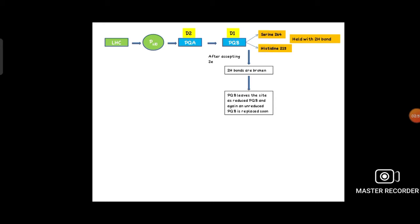Plastoquinone B is attached to the D1 protein niche. There are two hydrogen bonds held by plastoquinone B—serine 264 and histidine 215. After accepting two electrons, when plastoquinone B accepts the electrons, it gets reduced. When this happens, the two hydrogen bonds are broken, the reduced plastoquinone B will leave the site, then another unreduced plastoquinone B will replace that position, and the electron transfer system will continue.